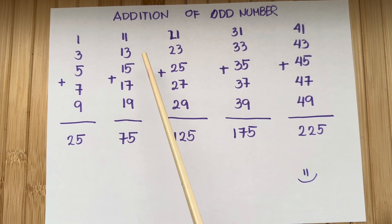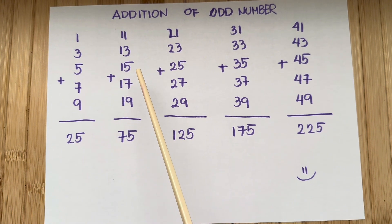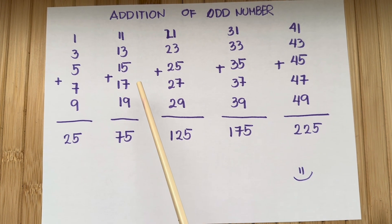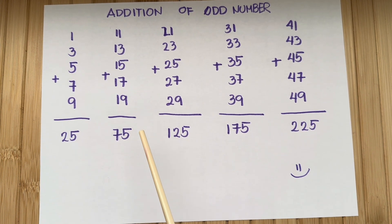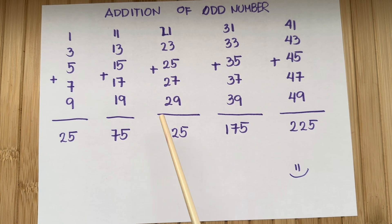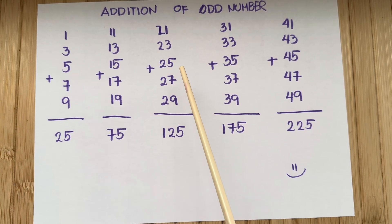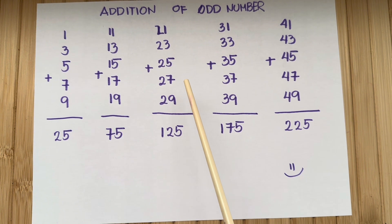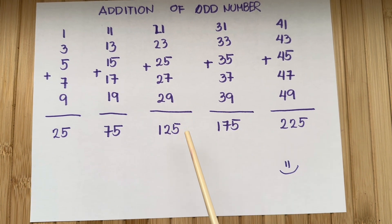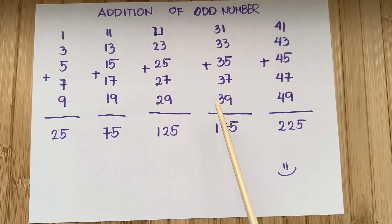11 plus 13 plus 15 plus 17 plus 19 is equals to 75. 21 plus 23 plus 25 plus 27 plus 29 is equals to 125.